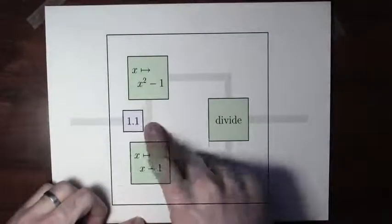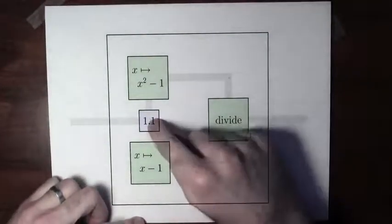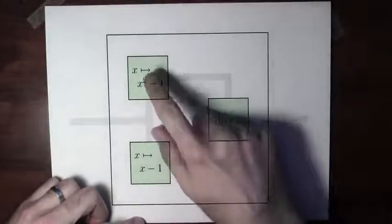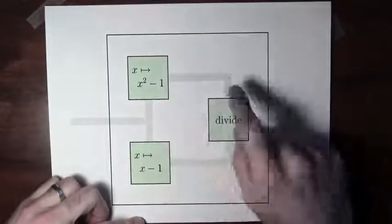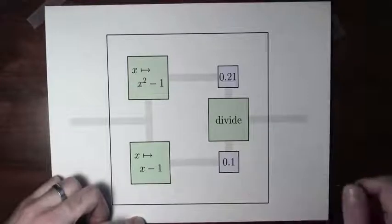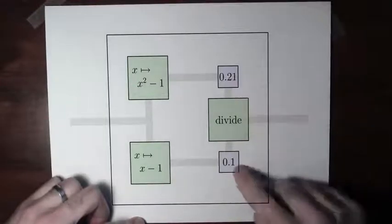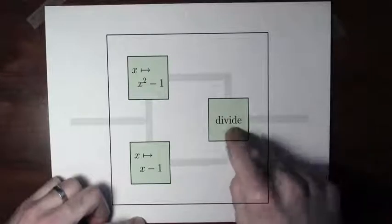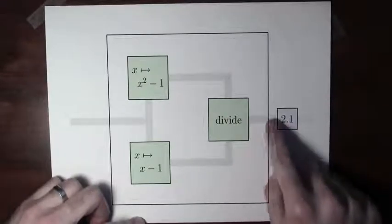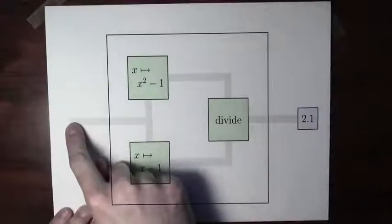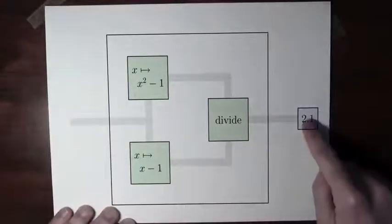I open up the function and plug in 1.1. In the numerator, 1.1 squared minus 1 is 0.21. In the denominator, 1.1 minus 1 is 0.1. Now 0.21 and 0.1 go into the division, and 0.21 divided by 0.1 is 2.1. So when I evaluate the function at 1.1, I get out 2.1.